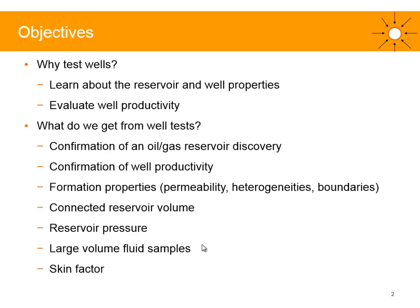What do we get from a well test? We get confirmation of reservoir discovery, confirmation of well productivity, and we can measure reservoir properties — so permeability over a large scale of investigation. We can identify the presence of heterogeneities further away from the well, meaning changes in reservoir properties, and we may detect some boundaries. We can also get some connected reservoir volume information over large connected volumes.